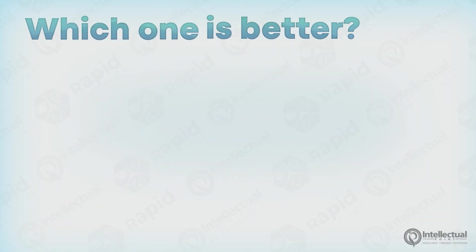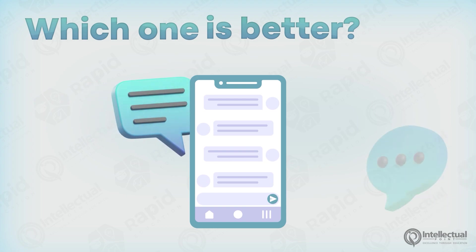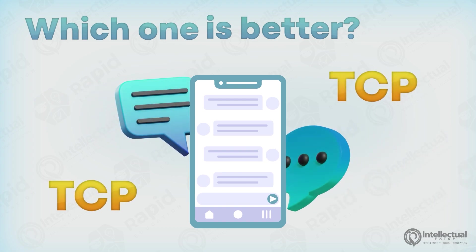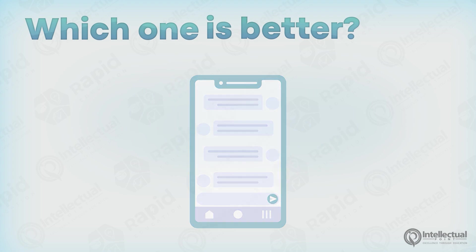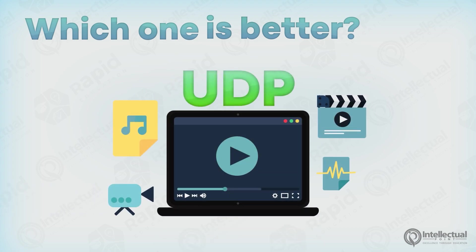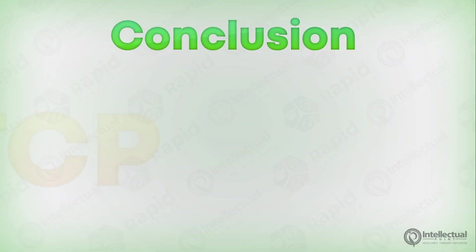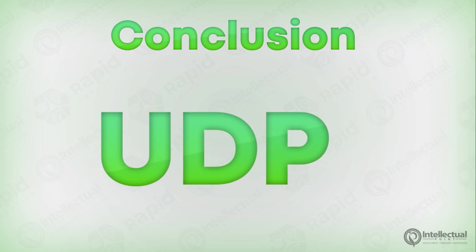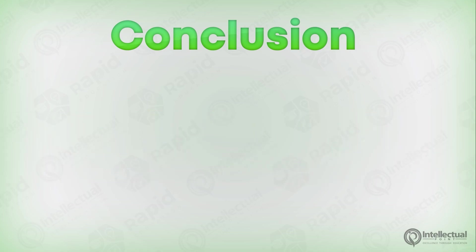Now, you're probably asking which one's better. Well, that all comes down to your application. If you were building a text application, you would want to use TCP as data is sent in order and doesn't require immediate transmission. However, if your application is more real-time stream-based, then UDP is the way to go because of its efficient packet transfers and minimal overhead. I hope this video helped you better understand the basics of TCP and UDP and how everyday data is affected by these two protocols.